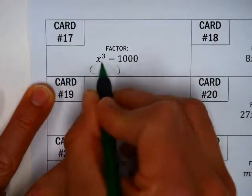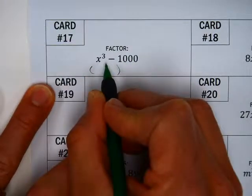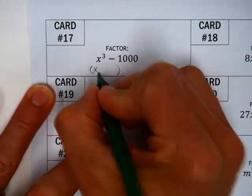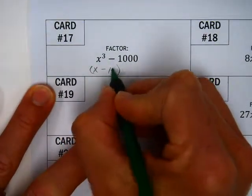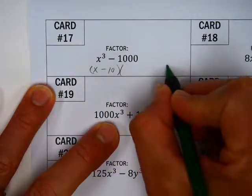Which is a cube root of each one of these. What's the cube root of x cubed? Good, x. And the cube root of 1,000, that's right, it's 10. So that's how you want to start this thing.